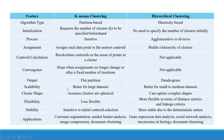In terms of scalability, K-Means is better for large datasets while hierarchical clustering is better for small to medium datasets. Cluster shape: K-Means assumes clusters are spherical, whereas hierarchical clustering can capture complex shapes. Flexibility: K-Means is less flexible, while hierarchical clustering is more flexible in terms of distance metrics and linkage criteria. Stability: K-Means is sensitive to initial centroid selection, while hierarchical clustering is more stable due to its deterministic nature.